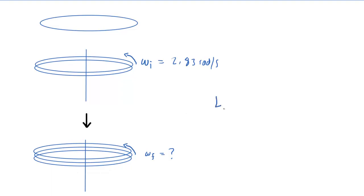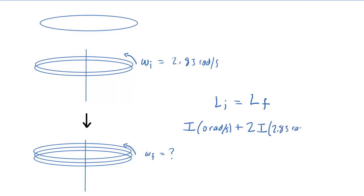We use conservation of angular momentum again — initial equals final angular momentum. For the initial, the stationary disk contributes I multiplied by zero radians per second, plus the two disk system which has a moment of inertia of 2I and is spinning at 2.83 radians per second. They all join together into a three disk system, whose moment of inertia is 3I, since I plus I plus I equals 3I.